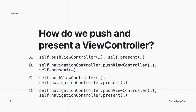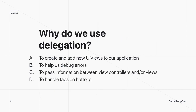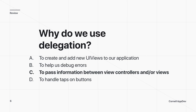Does everyone remember the difference between how that looks on the screen? The next question is about delegation — why do we use delegation? We use delegation to pass information between view controllers and/or views. What we used this for in the last demo was to save the text inputted on one screen and update it on another screen.